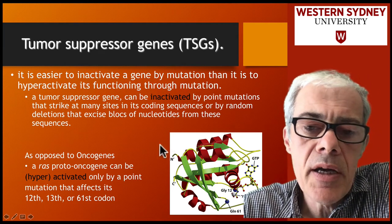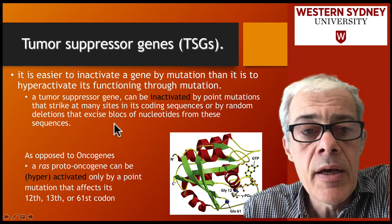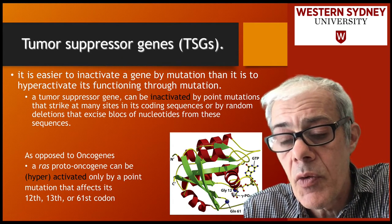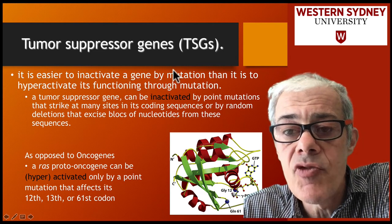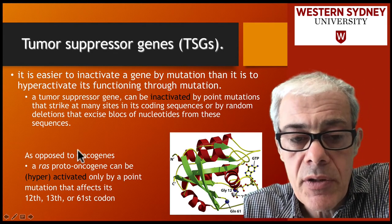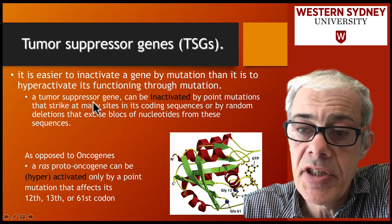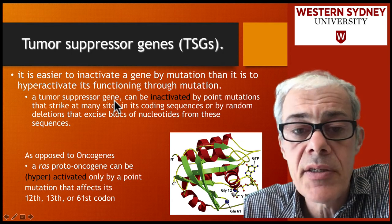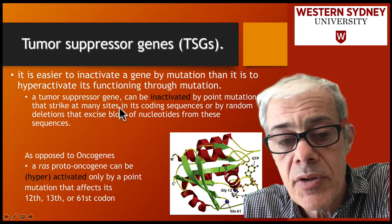Comparing tumour suppressor genes with oncogenes, we find that more tumour suppressor genes are mutated in cancers than we find oncogenes hyperactivated. That's because it's easier to inactivate a gene through mutation than to hyperactivate one. It's quite difficult to hyperactivate an oncogene, but quite easy to knock out a tumour suppressor gene, so more tumour suppressor genes are identified in cancer samples.